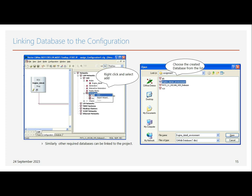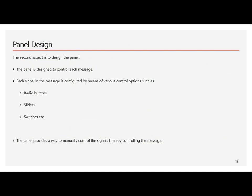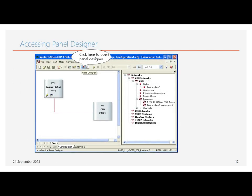After configuring the database, similarly link the database to the project by right-clicking and choosing the created database from your local PC. Next is the panel design: each signal in the message is configured using various controls like radio buttons and sliders. The panel provides a way to manually control the signals and messages. For example, an acceleration message can be adjusted up to 200 km/h. To access panel design, click the panel designer symbol and it will open.